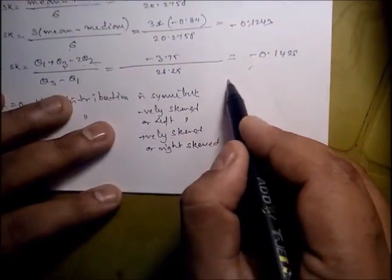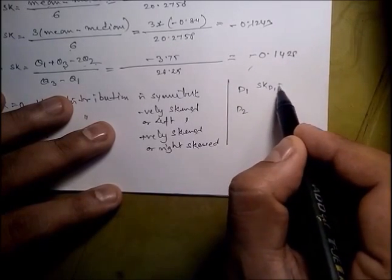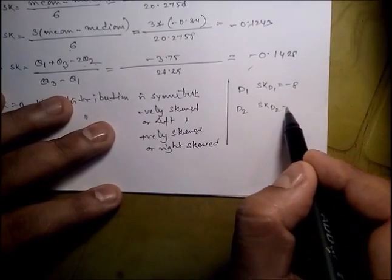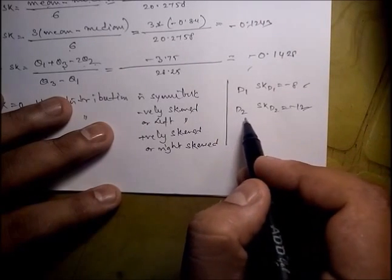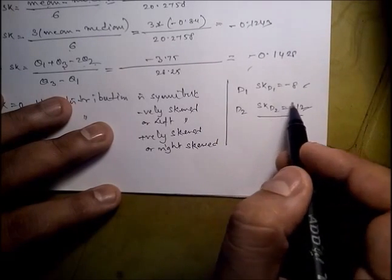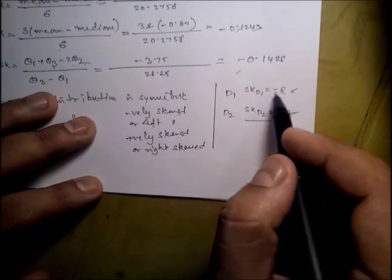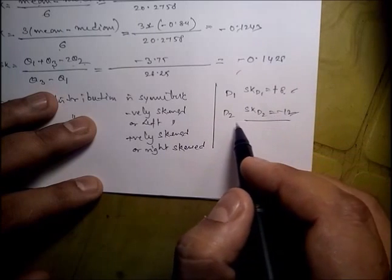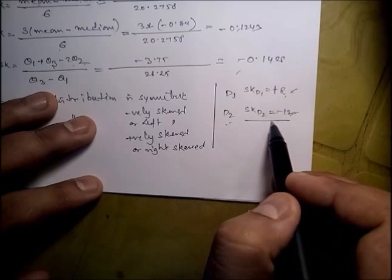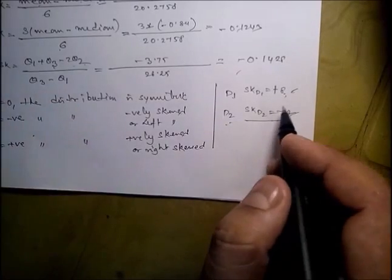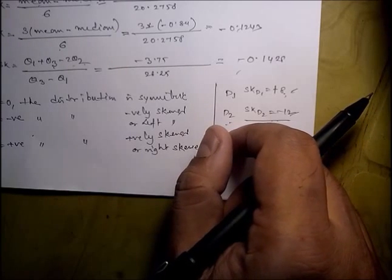Suppose we have two datasets, data 1 and data 2. If skewness of data 1 is −8 and skewness of data 2 is −12, both distributions are negatively skewed, but data 2 is more left-skewed than data 1. Or if data 1 has SK = +8 and data 2 has SK = −12, data 1 is positively skewed and data 2 is negatively skewed. Through SK we can compare two data distributions.